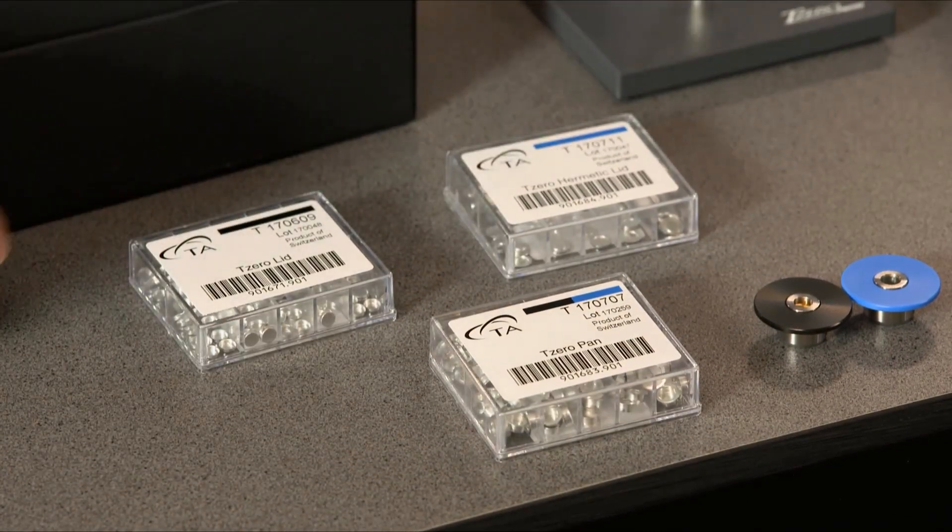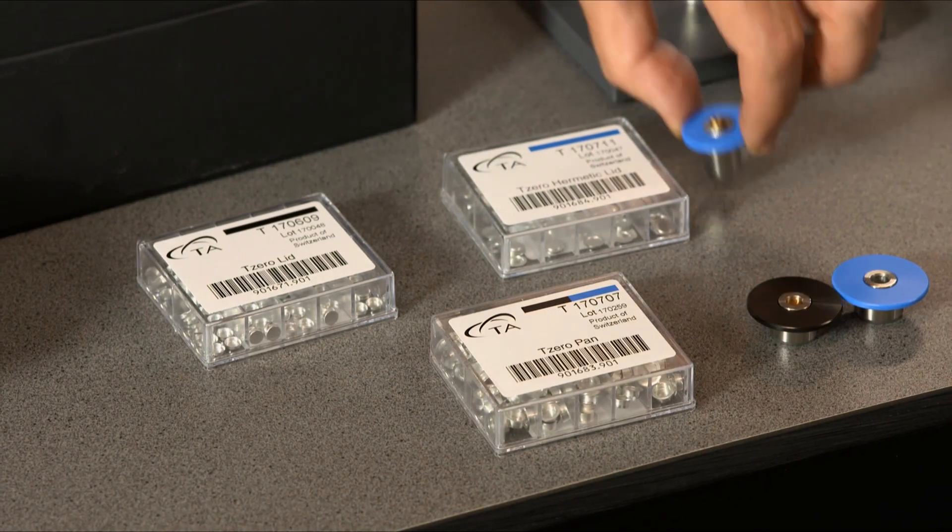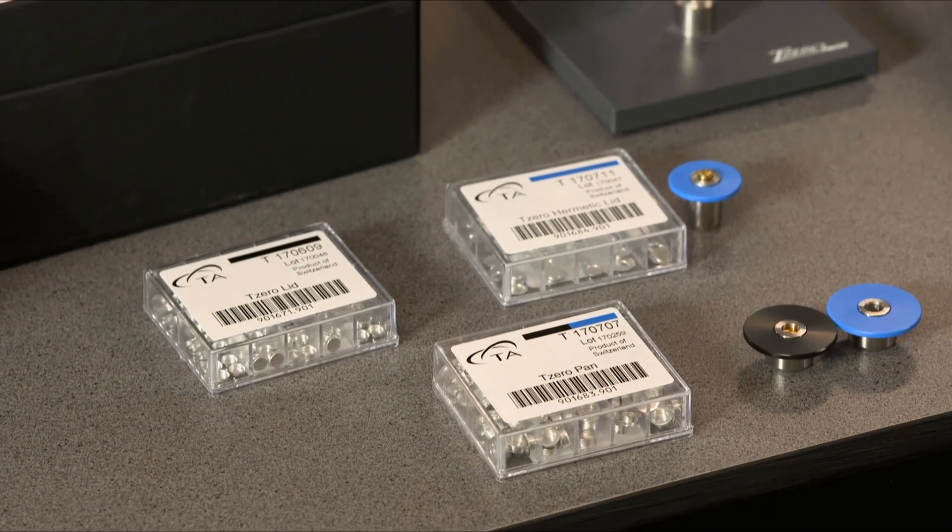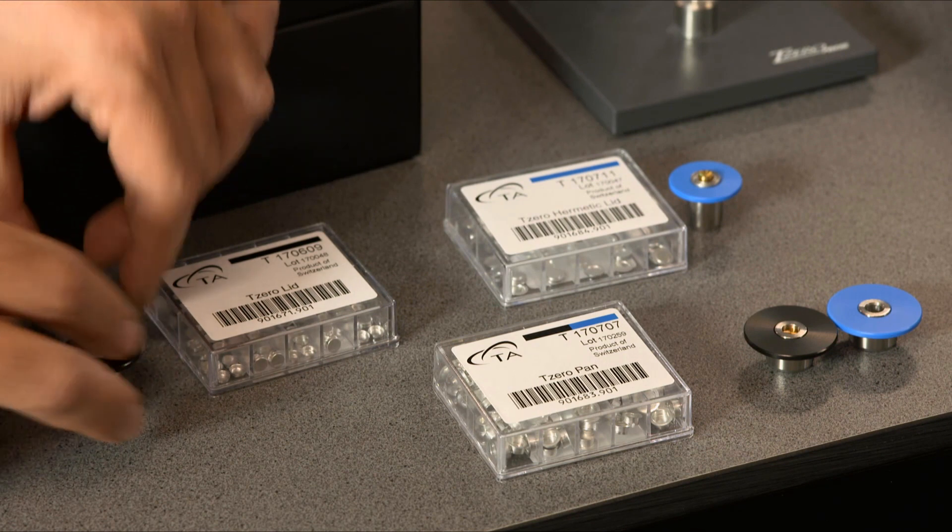And then you have two lids, one which we call T0 hermetic lids, which will be used with blue upper die. And this one is T0 lid, which will be used with any of those.